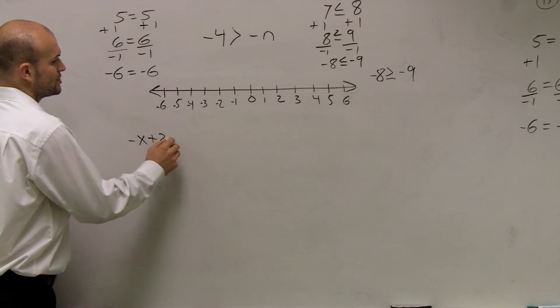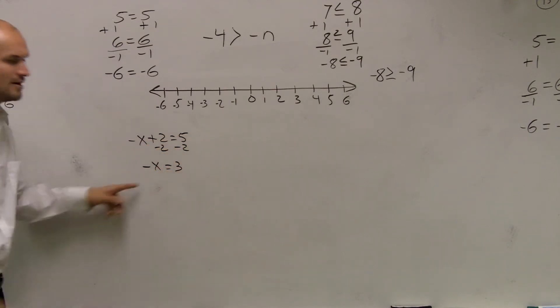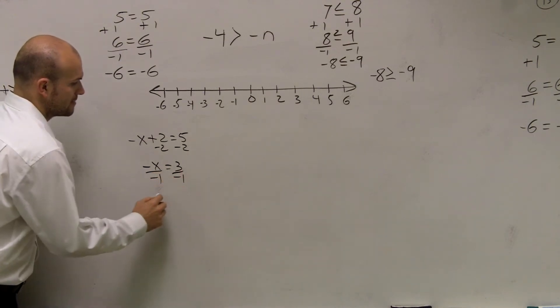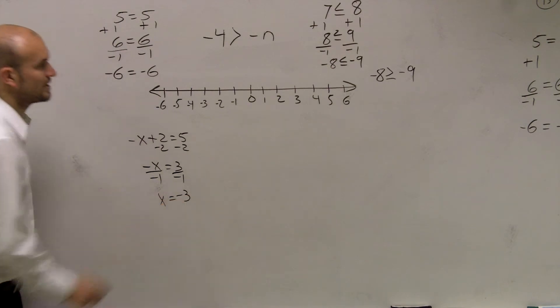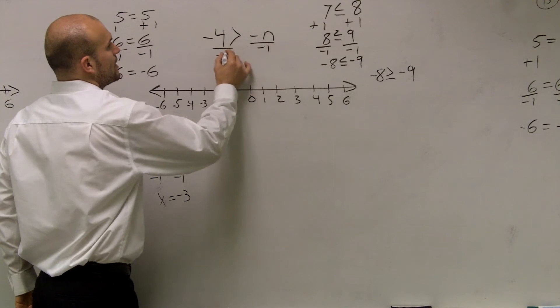Negative x plus 2 equals 5. You had to subtract 2. Negative x equals 3. We didn't say negative x equals 3. We had to divide by negative 1 and say x equals negative 3. So here's the same thing. We need to get rid of that negative. I'll divide by negative 1.